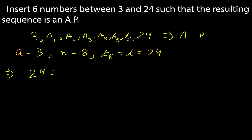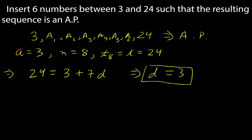Applying the formula: 24 = 3 + 7d, so d = (24 − 3)/7 = 21/7 = 3. Therefore d = 3. Starting from a = 3 and adding d = 3 each time: a1 = 6, a2 = 9, a3 = 12, a4 = 15, a5 = 18, a6 = 21. So the six numbers to insert between 3 and 24 are 6, 9, 12, 15, 18, and 21, giving an arithmetic progression.